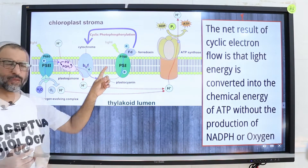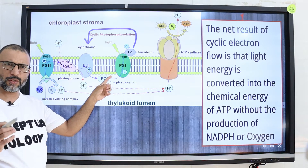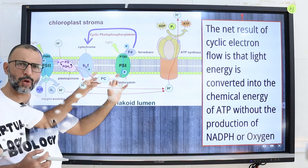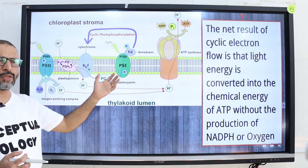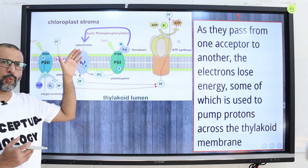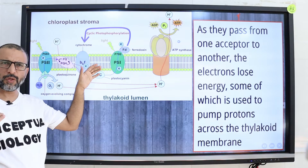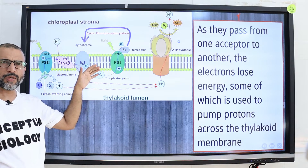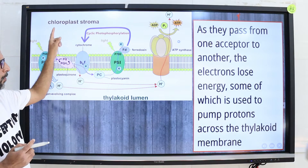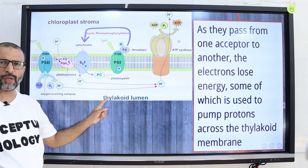The net result of this cyclic electron flow is that light energy is converted into chemical energy of ATP without the production of NADPH and oxygen. As electrons pass from one electron acceptor to another, they lose energy, and some of that energy is used to pump protons from the chloroplast stroma to the thylakoid lumen or thylakoid inner space.